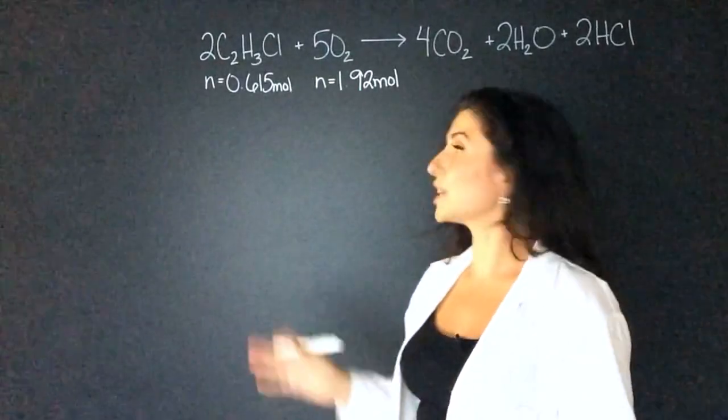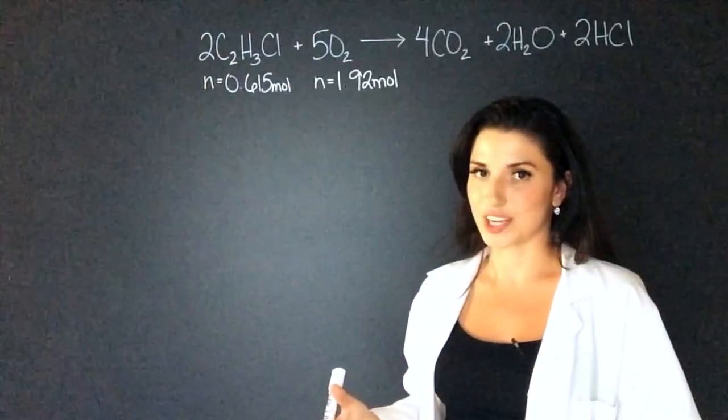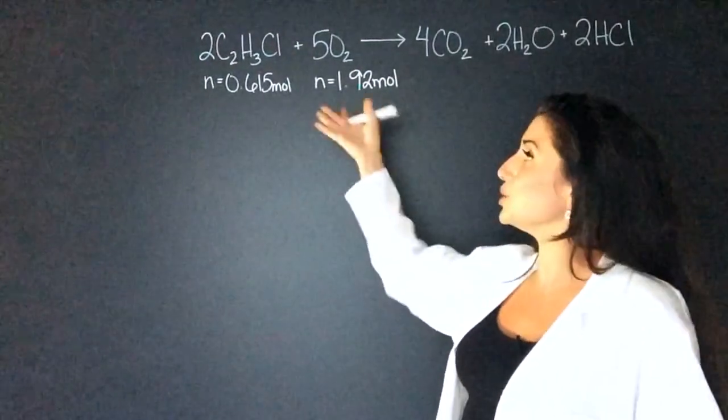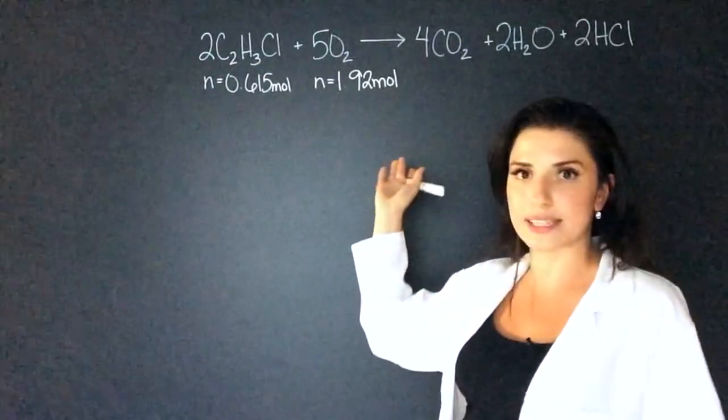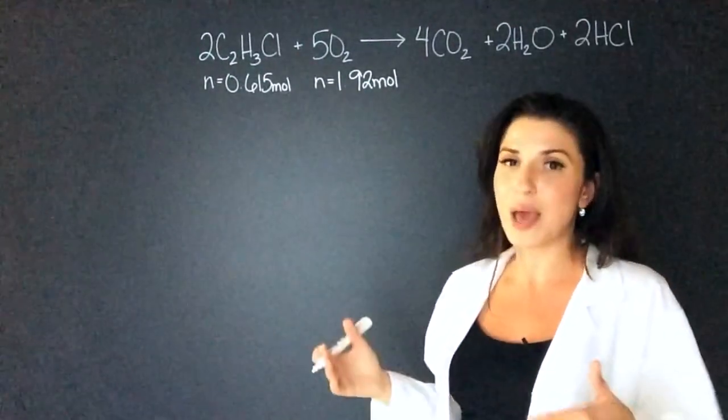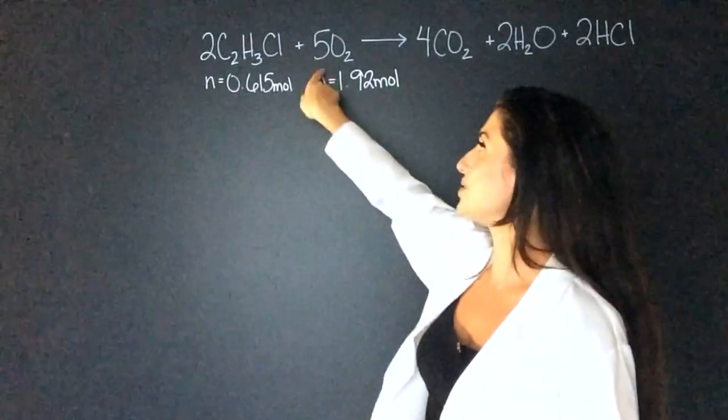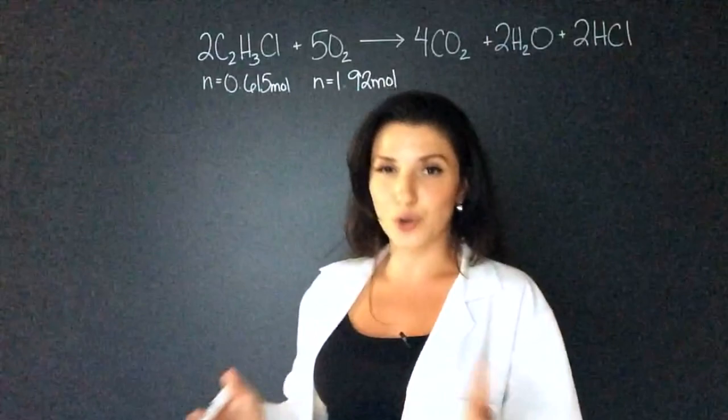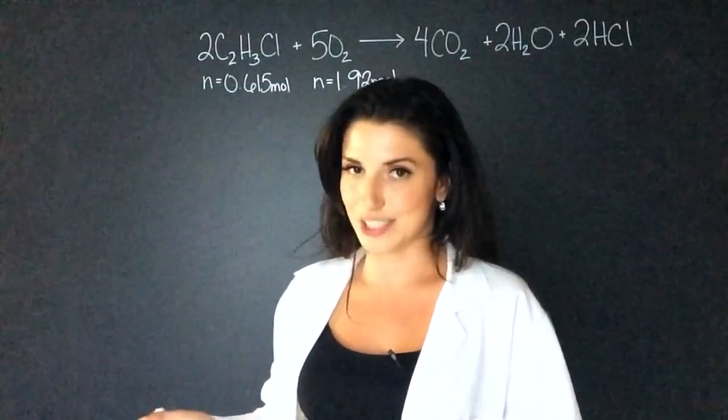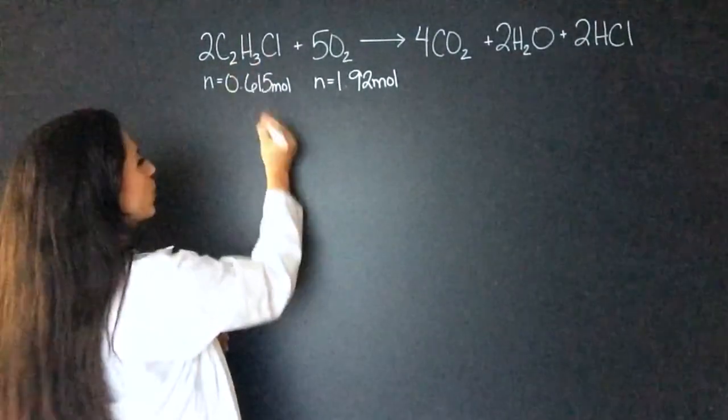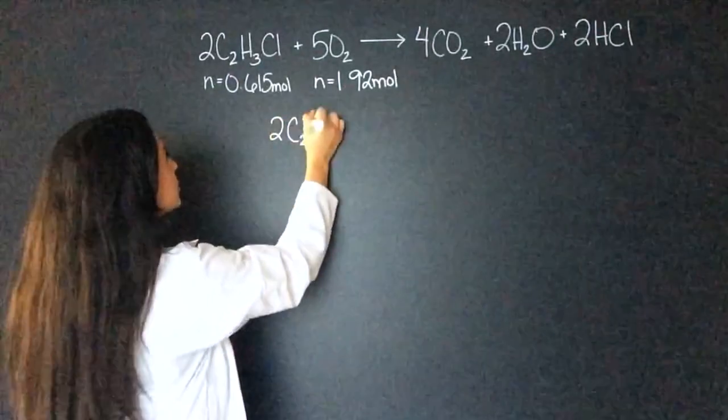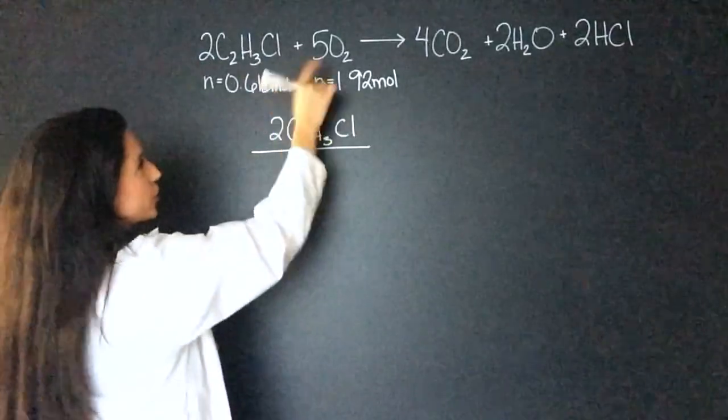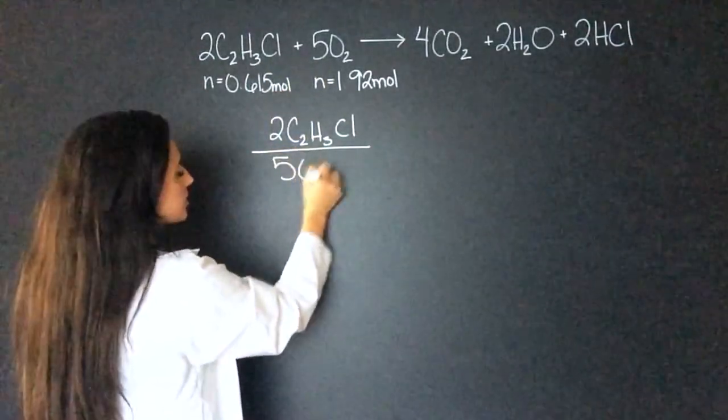So I started with writing out the moles that they gave us in the question. Now remember, when it's a one-to-one ratio, you can just use the moles and you would know which one is limiting, whichever one has less moles. But in this case, you can't do that because they have stoichiometry coefficients in front. What I do is a cross multiply and divide situation. So I know that two moles of C2H3Cl will react with five moles of O2.